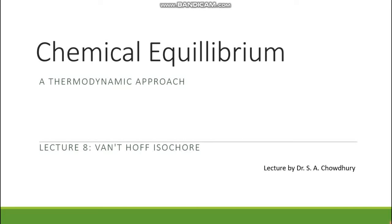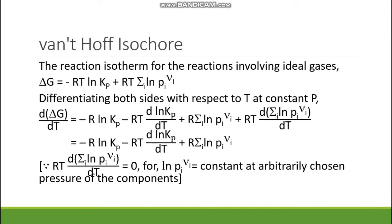Hello everyone. In the next lecture of Chemical Equilibrium or Thermodynamic Approach, in lecture number 8, the topic that is going to be discussed is Van't Hoff isochore. Here we have to start from the reaction isotherm for the reactions involving ideal gases. The reaction isotherm is: ΔG = -RT ln Kp + RT Σᵢ ln Pᵢ^νᵢ.